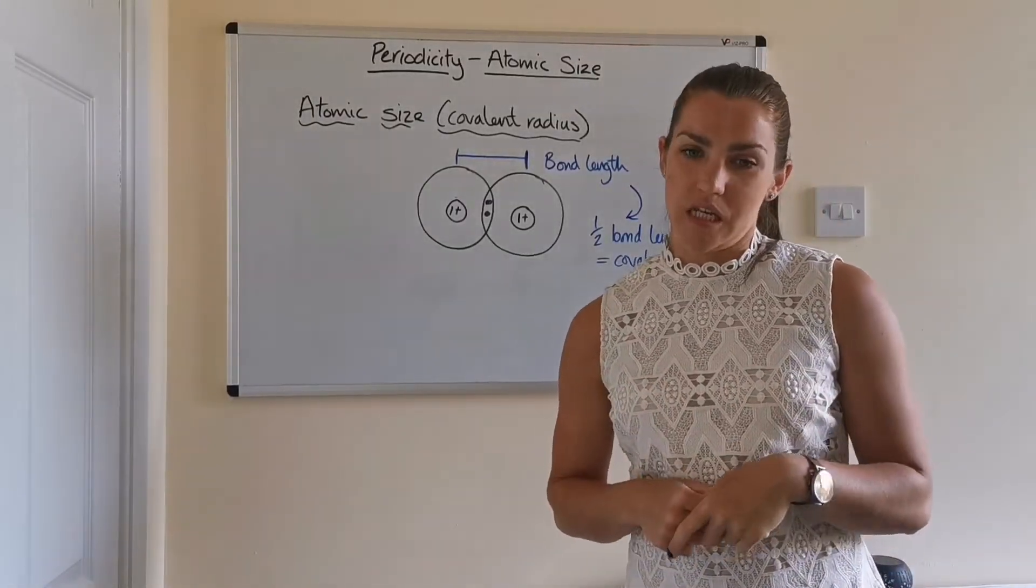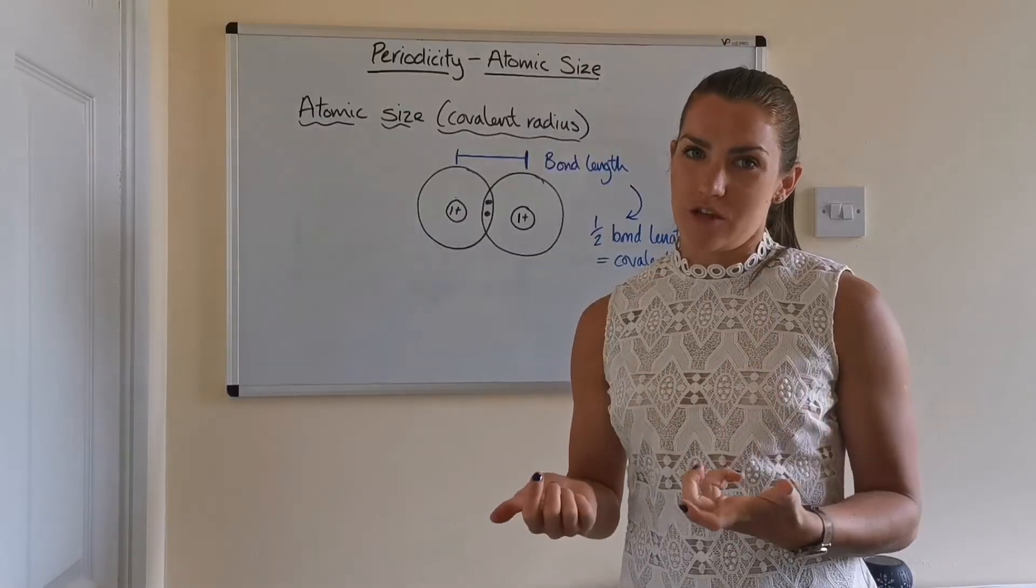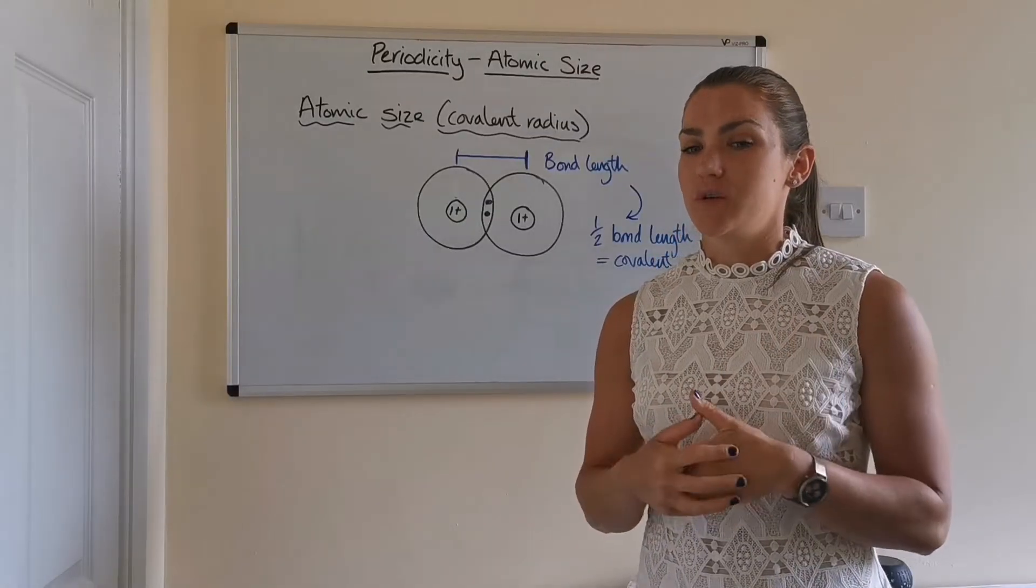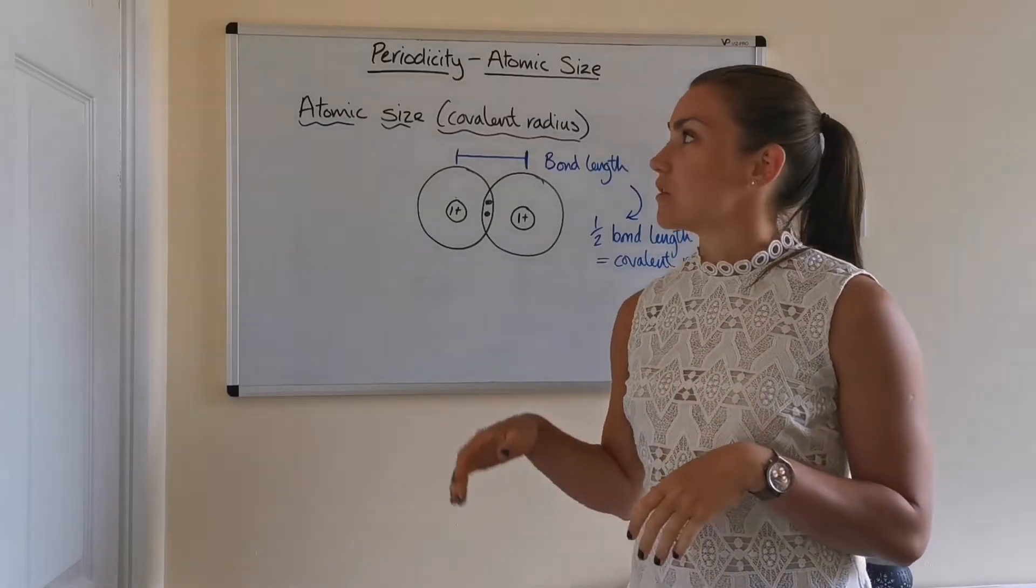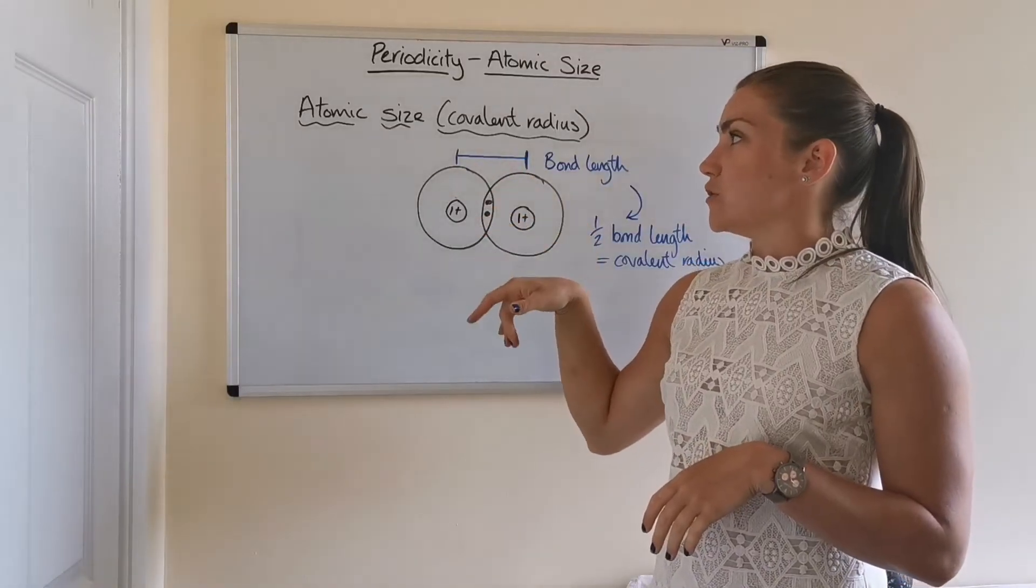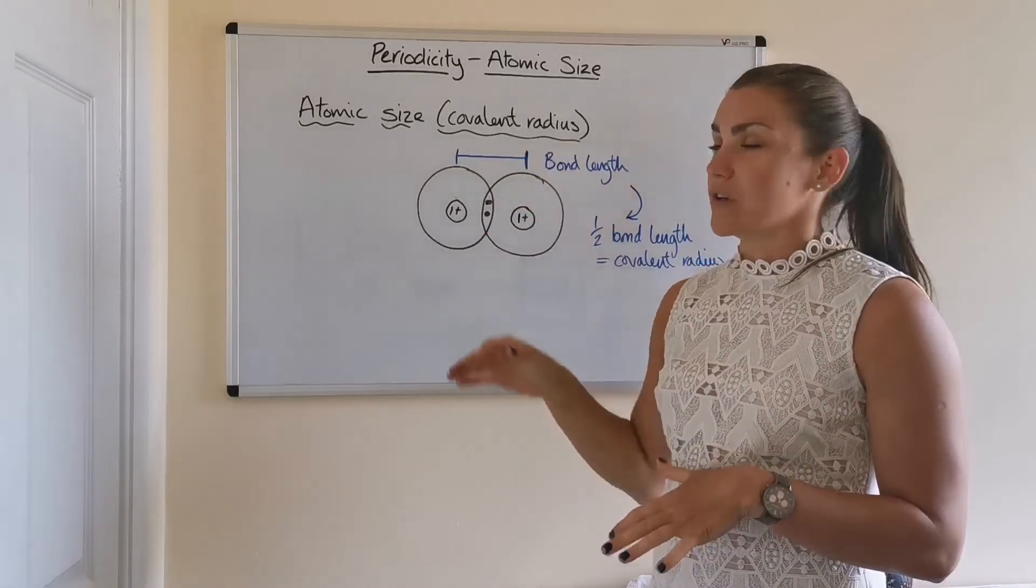Now atoms are extremely tiny, so how do we actually measure the size of them? What we do is we measure the length of a bond between two atoms, so this is known as the covalent radius.